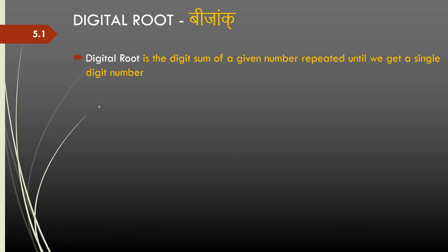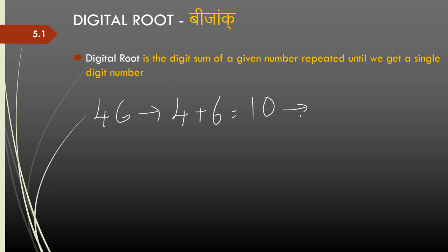For example, if I need the digital root of 46, the digit sum is 4 plus 6, that is 10. I have a two digit number again, so I will repeat the digit sum: 1 plus 0 gives me 1. So 1 is the digital root of 46.